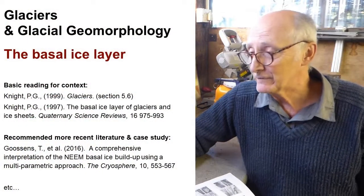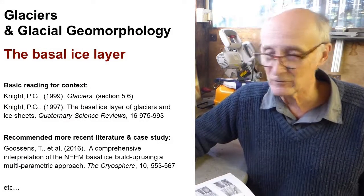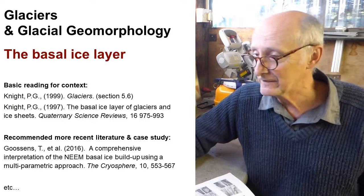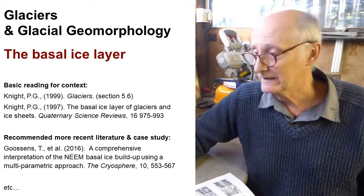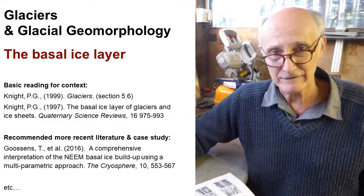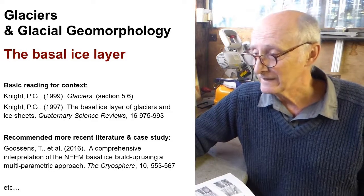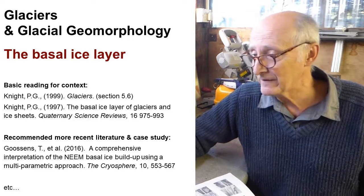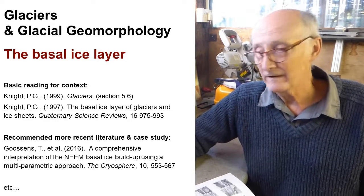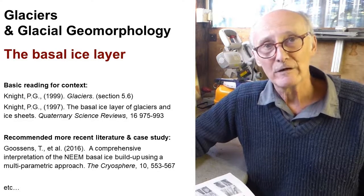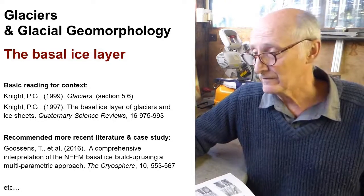There's some reading for you to do. I've given you the very basic background reading from the old textbook — Section 5.6 will give you the basics you need before you really get started. And then there's another old paper from me there, the 1997 review paper on the basal ice layer of glaciers and ice sheets. Maybe have a look at that before you start reading the more advanced and more recent literature. There's also one case study example, Gussens et al 2016, looking at basal ice at the bottom of the Neem ice core.